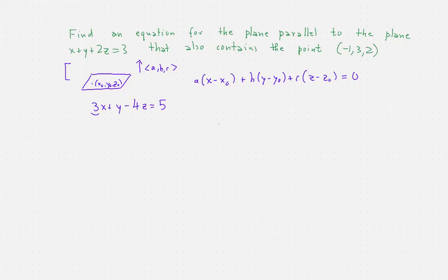So in this case, there would be 3, 1, and negative 4, give us a vector which is normal to the plane.